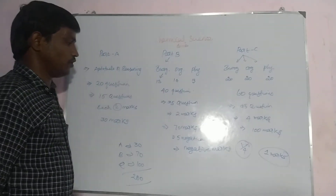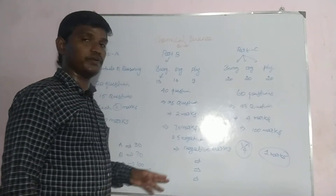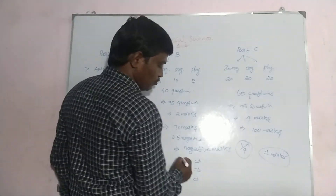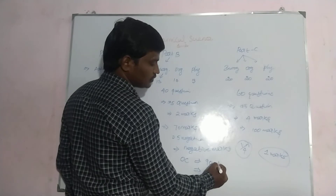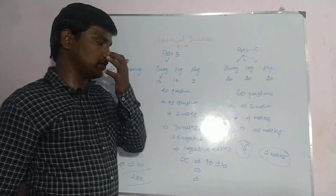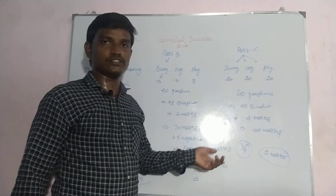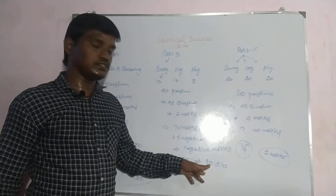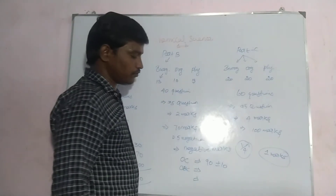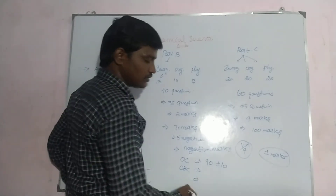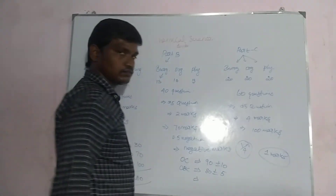The cutoff depends on the candidate category — General/OC, OBC, SC/ST, or physically handicapped. For General/OC candidates, the cutoff is mostly around 90 marks, or 95 plus or minus 10. Sometimes it can be 100 marks for JRF or lectureship. If questions are tough, cutoff will be less; if questions are easy, cutoff will be more.